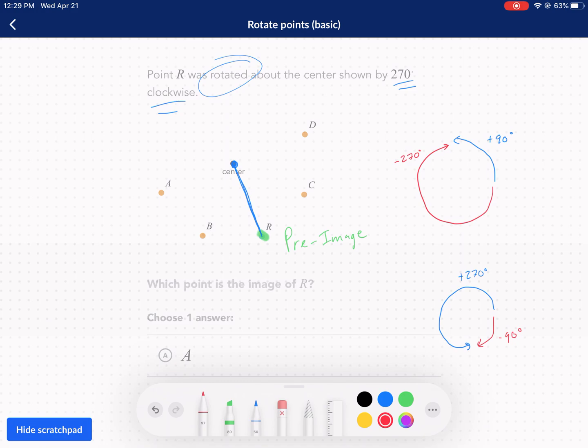Now positive rotations are counterclockwise. Negative rotations are clockwise. So this would be red is clockwise here. So that is a negative rotation.